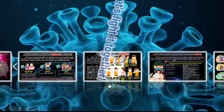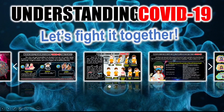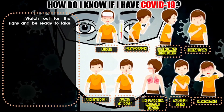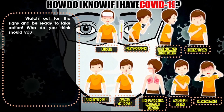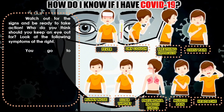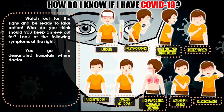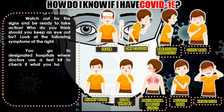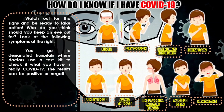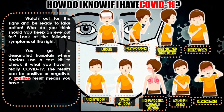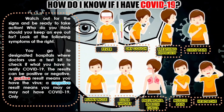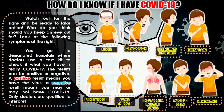Now we need to know: if we have COVID-19, what are the possible symptoms? We need to watch out for the signs and be ready to take action. Look at the following symptoms: fever, dry cough, breathing difficulty, chest pain, runny nose, sore throat, pneumonia in both lungs, muscle pain, and headache.